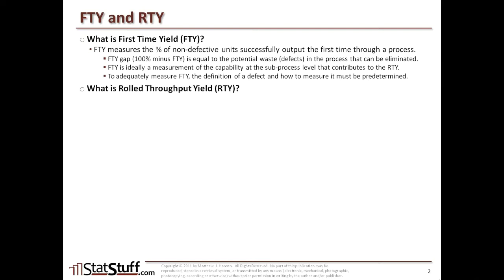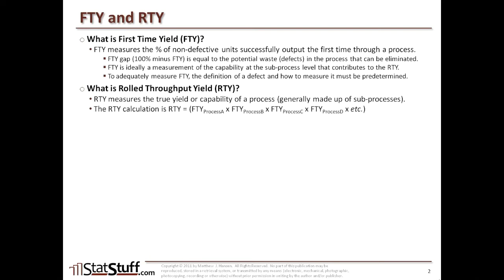What is the rolled throughput yield? Rolled throughput yield is a measurement of the true yield of the capability of a process — a process that's generally made up of many sub-processes. The actual calculation for rolled throughput yield is: RTY equals the first-time yield of process A, times the first-time yield of process B, times the first-time yield of process C, and so on, for as many sub-processes as there are.